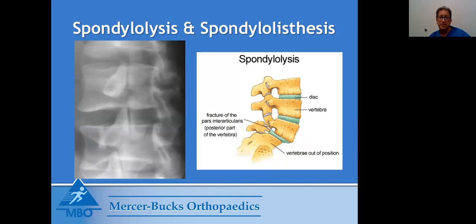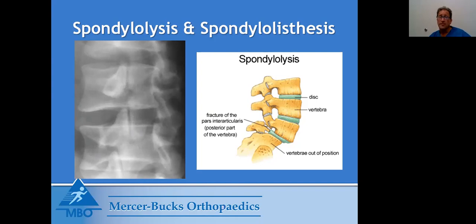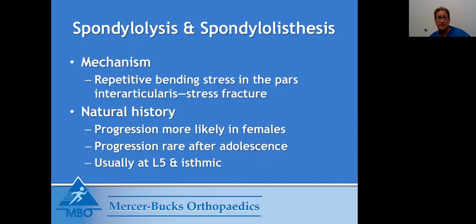They just get a stress reaction and have pain in their back. Occasionally this will actually break and one bone will move forward on the other. This is something you'd see if you or your daughter does a lot of hyperextension and has pain when extending the back. It usually only presents as back pain, not leg pain, although occasionally it can. The problem is it's very hard to diagnose because it only shows up in about 30% of x-rays. In females, it tends to progress more rapidly than in men.